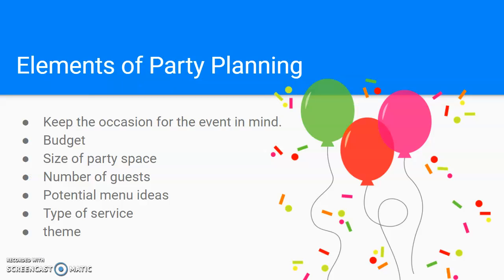There are several elements of party planning that you need to keep in mind when you are planning a party. The first thing, of course, is keep the occasion for the event in mind. Is it a birthday party? Is it a graduation? Is it a dinner party? And from there, you're going to also want to think about budget. How much can you spend? Depending on how much you can spend, that's going to correlate with the size of the party space, the number of guests that can come, and potential menu items. Everything is connected with how much money you can spend.